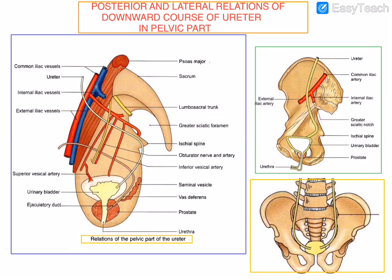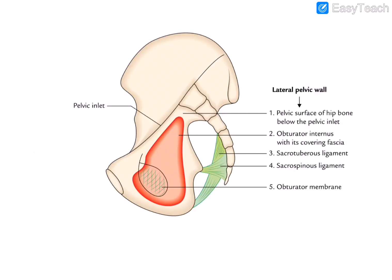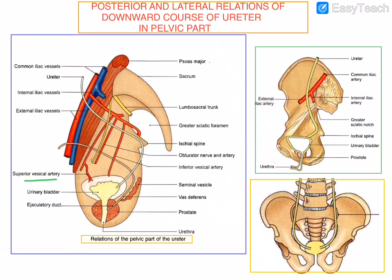Now the lateral relations of the downward course of the ureter in the pelvic part. The first one is the fascia covering the obturator internus. On the medial aspect of the hip bone we find the obturator internus muscle, which is covered by the fascia. This is the first lateral relation of the ureter. Next is the superior vesical artery, and also related laterally is the obturator nerve and artery, associated with the obturator vein.